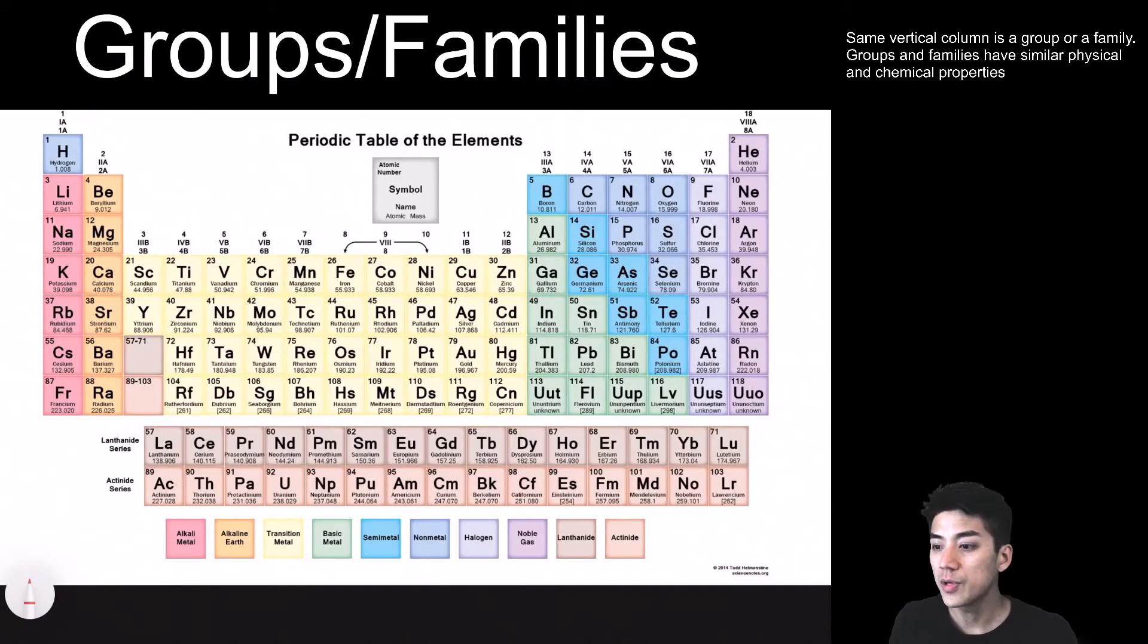So just keep in mind that every periodic table is just slightly different. Some have different colors on them, but they're all trying to convey the same information. And that is, if you're in the same vertical column, that means you're in the same group or family. And groups and families exhibit and display the same physical and chemical properties. So this first group on the far left is known as the alkaline metal group.